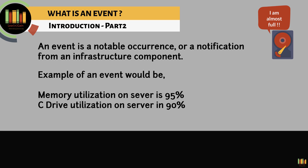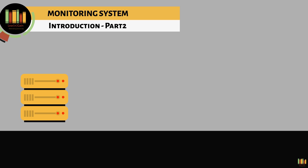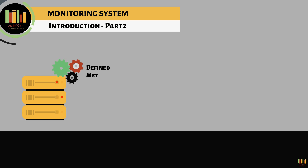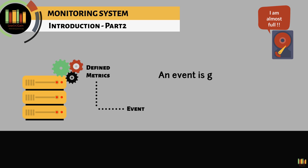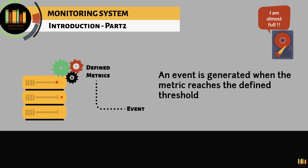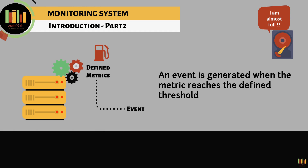Another example is C drive utilization on a server is 90%. The monitoring system generally has an agent installed on the host which will monitor the metrics as defined based on one's business requirement, and when the defined threshold is reached, the monitoring system generates an event. This is just like the fuel indicator in your car where the warning sign pops when the remaining fuel is 10% or less.